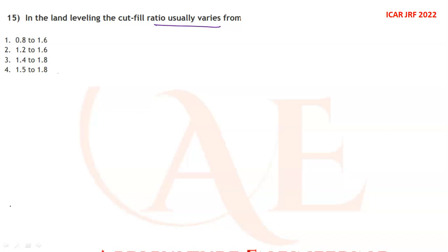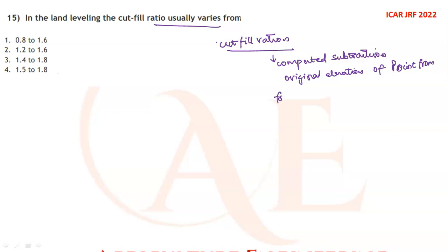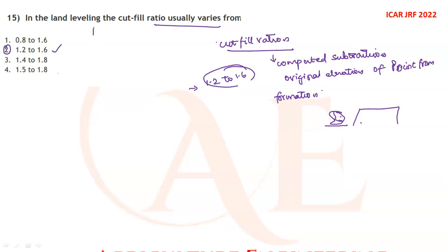In land leveling, the cut-fill ratio is computed by subtracting the original elevation of a point from the formation level. This represents the relationship between the cut area and the fill area. The value usually ranges from 1.2 to 1.6 — so option two is the correct answer.